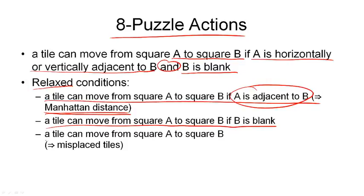And finally, we can have a heuristic if we drop both conditions that says a tile can move from A to B, and there are no conditions. And of course, this then gives us the misplaced tile heuristic.